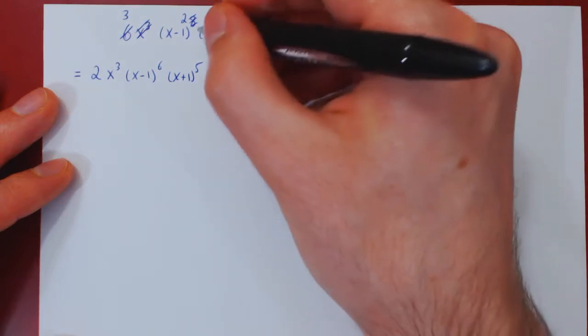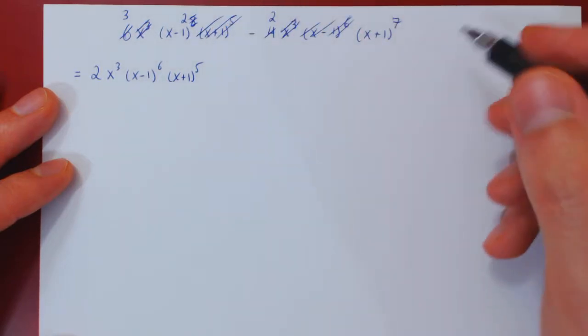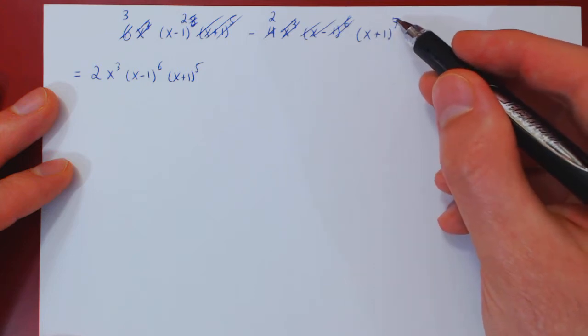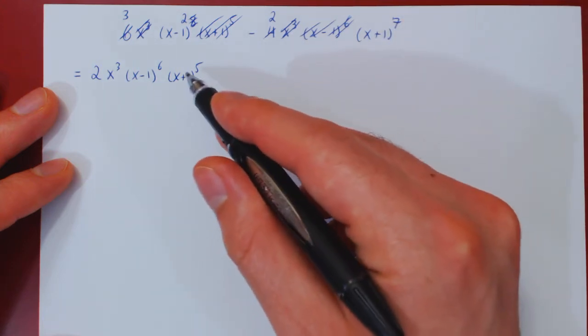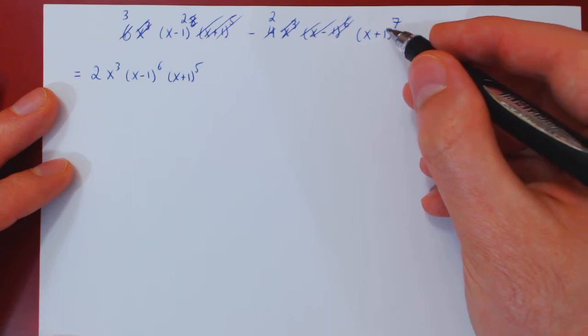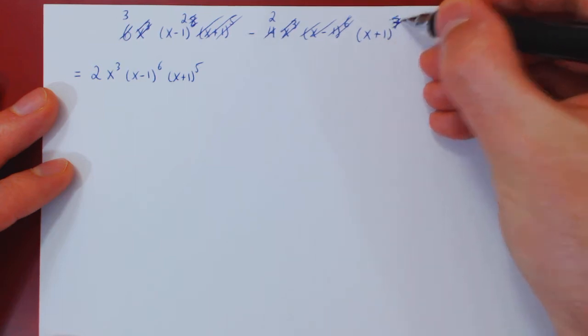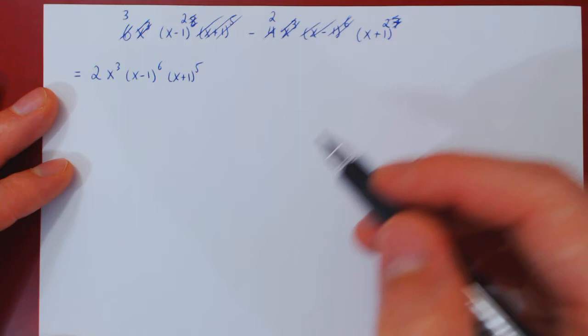So we took it all here. This one is gone. x plus 1 shows up here 7 times. We factored 5 of the factors out. So that leaves us with 2 factors of x plus 1, so x plus 1 squared.